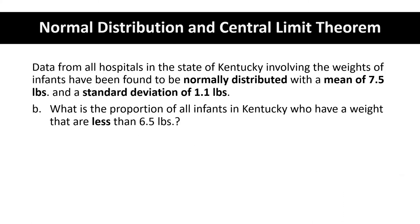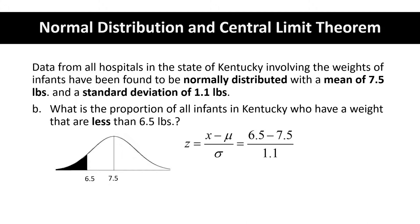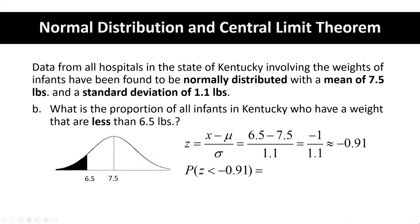Part B: the proportion that is less than 6.5 pounds. Again let's start with a picture. Six and a half pounds is less than the mean, so the z-score that corresponds to 6.5 pounds should be negative. Plugging in our values: 6.5 minus the mean 7.5, divided by the standard deviation 1.1, gives a z-score of negative 0.91. We want the area to the left of negative 0.91, and looking this up in the table you get 0.1814.